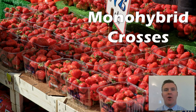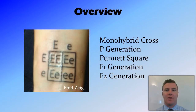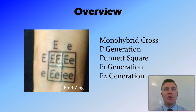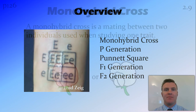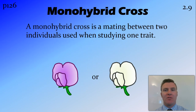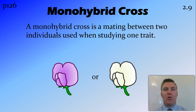In this video we're going to look at monohybrid crosses. We're going to define monohybrid crosses and then use Punnett squares to look at the P generation, F1, and F2 generations. The definition of a monohybrid cross is a mating between two individuals used when we're studying a particular trait — and the important thing is that it's one trait, being mono. We also have dihybrid and trihybrid crosses, which are much more complicated.